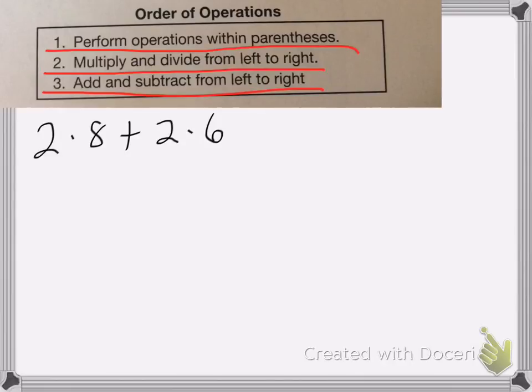So when I'm looking at this problem, 2 times 8 plus 2 times 6, I'm going to look at my list up here and see what I need to do first. So do I have any parentheses? No, I don't. Do I have multiplication? Yes, I do. So I need to multiply first.